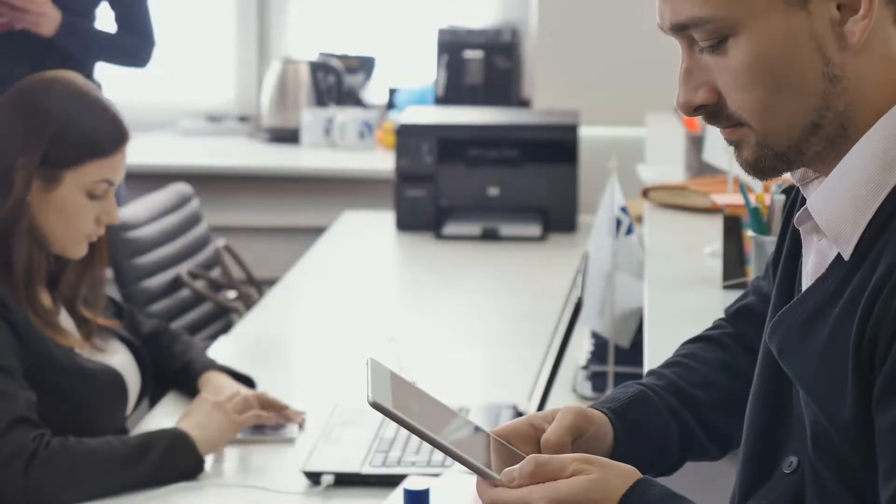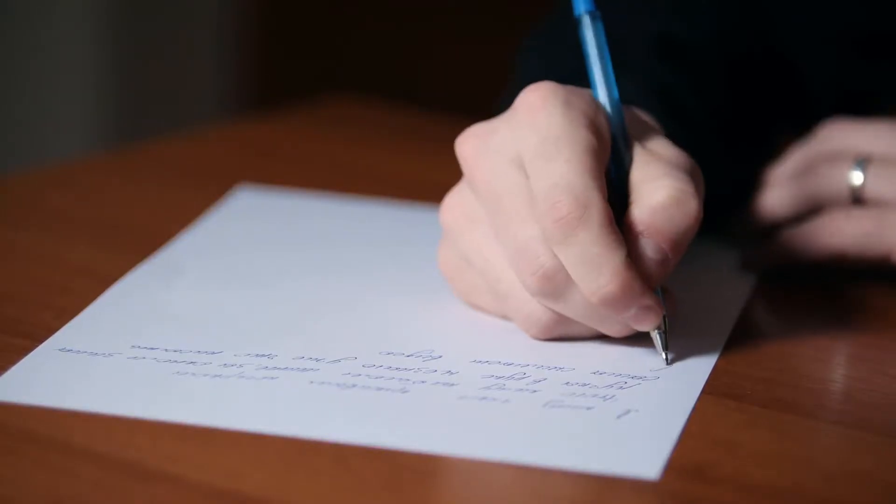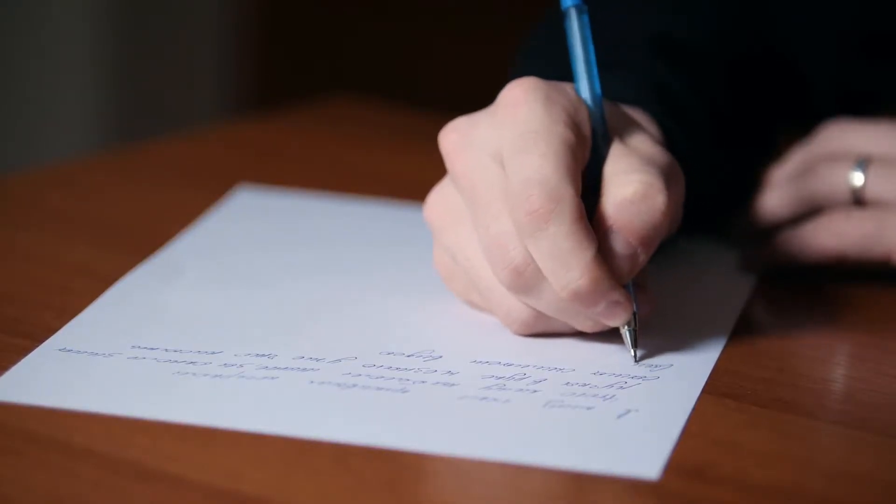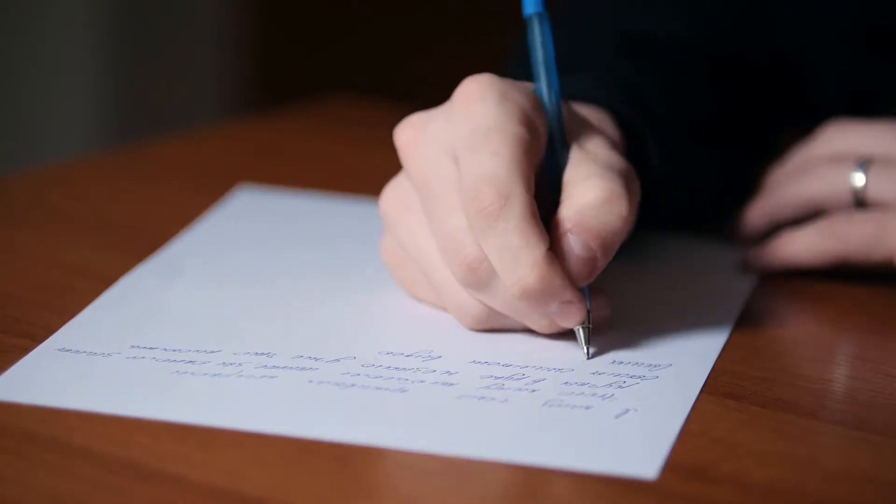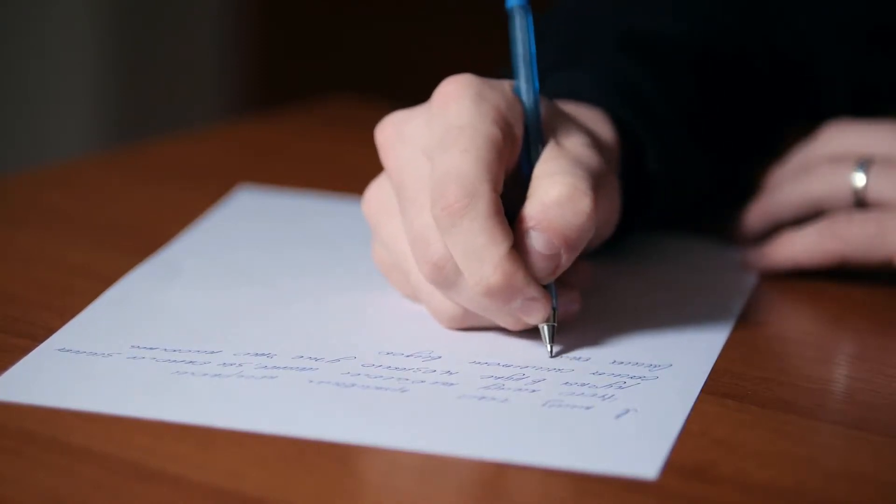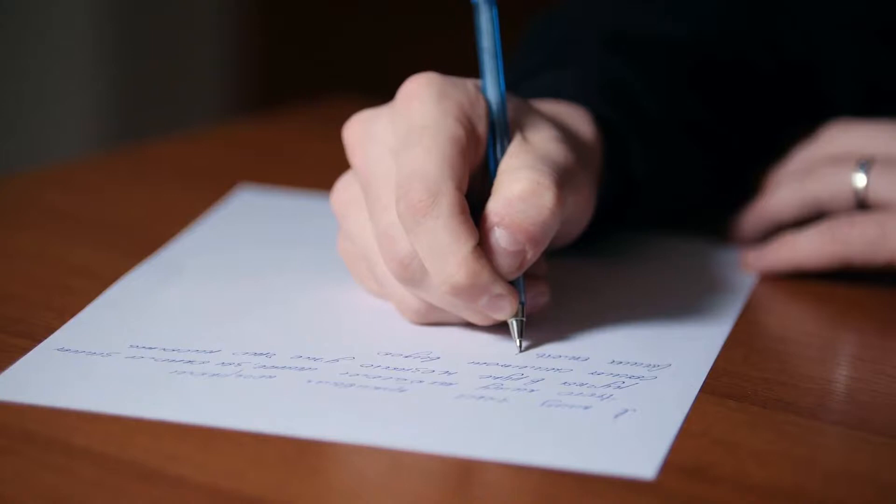The person who creates a grantor trust can maintain control over the assets in the trust, making decisions regarding the assets just as he did before the trust's creation. He can appoint himself as its trustee.